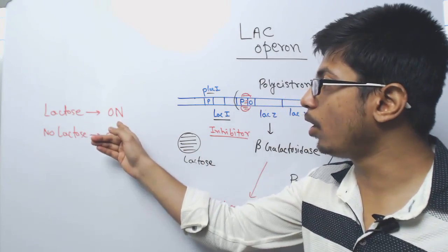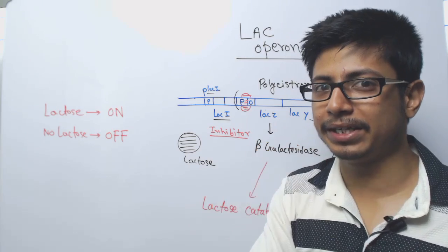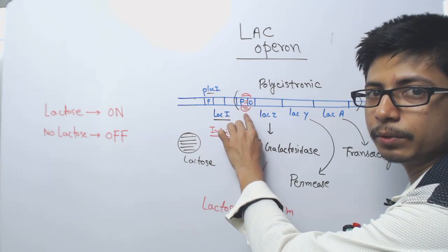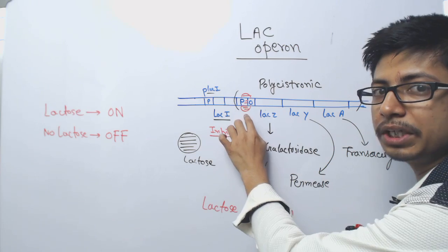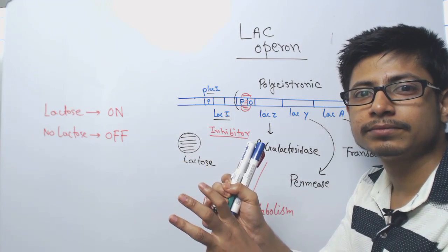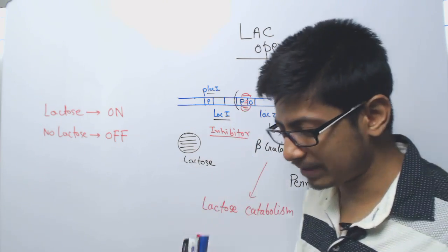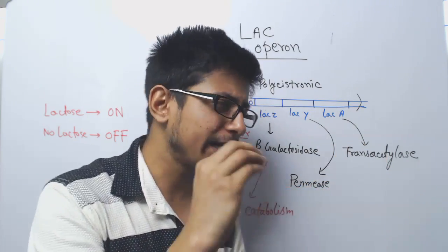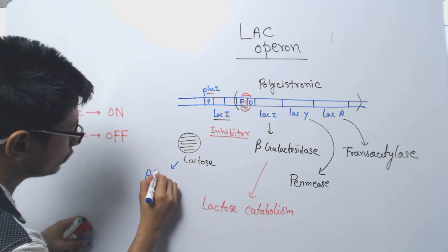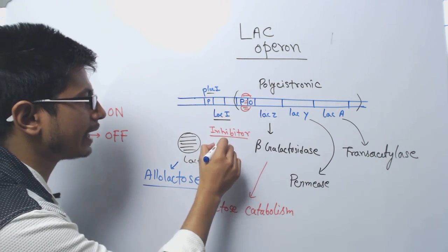For turning off, we don't have to worry — if there is no lactose, this scenario continues. But now the question is: we need to turn the operon on when there is lactose in the medium. If there is lactose, it can interact with this inhibitor molecule. Upon binding of lactose to the inhibitor, it changes the structural conformation of the lac inhibitor. Not exactly lactose itself — lactose is slightly chemically modified and converted into allolactose, and allolactose binds with the inhibitor.